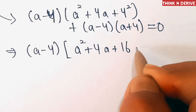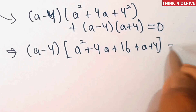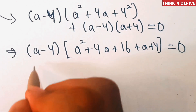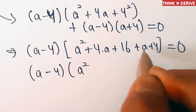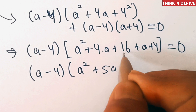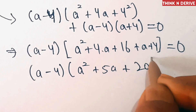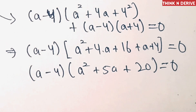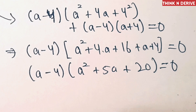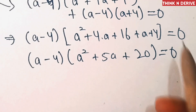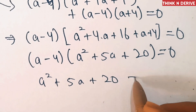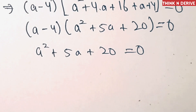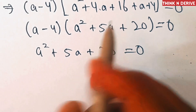After taking (a − 4) common, we are left with a² + 4a + 16 + a + 4 = 0, which simplifies to a² + 5a + 20 = 0. So we have found the other factor. To find the remaining two solutions, we set a² + 5a + 20 = 0 and use the quadratic formula.